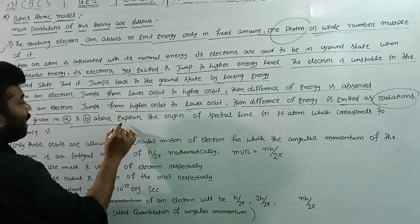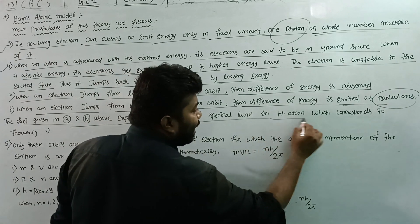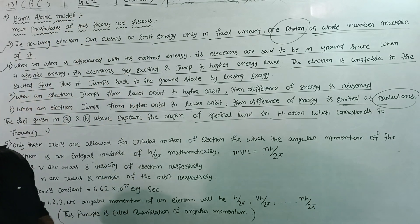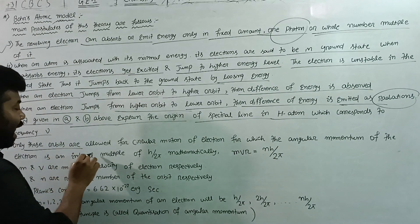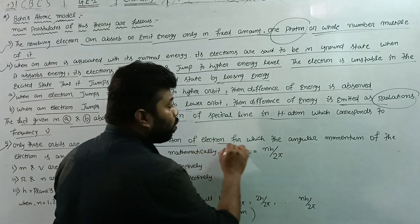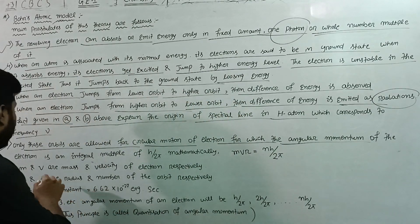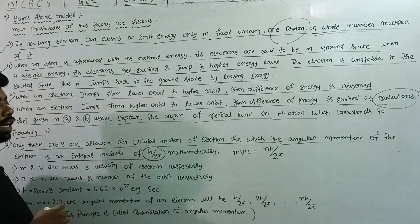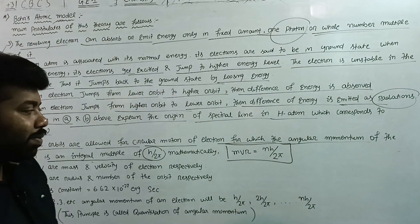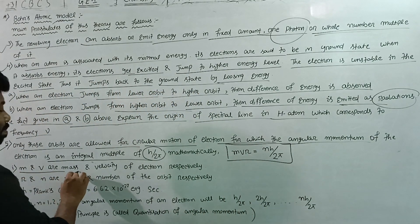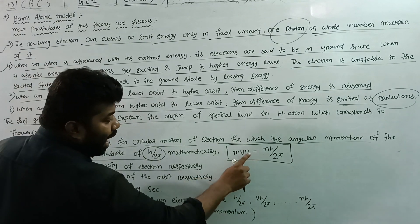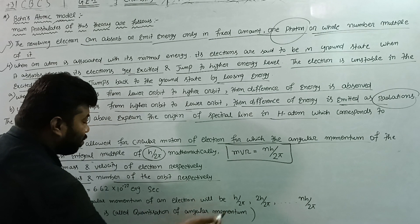This experimentally explains the origin of spectral lines in the hydrogen atom, which corresponds to frequency V. Only those orbits are allowed for circular motion in which the angular momentum of the electron is an integral multiple of h by 2 pi. Here M and V are the mass and velocity of the electron, and R and N are the radius and number of the orbit respectively.